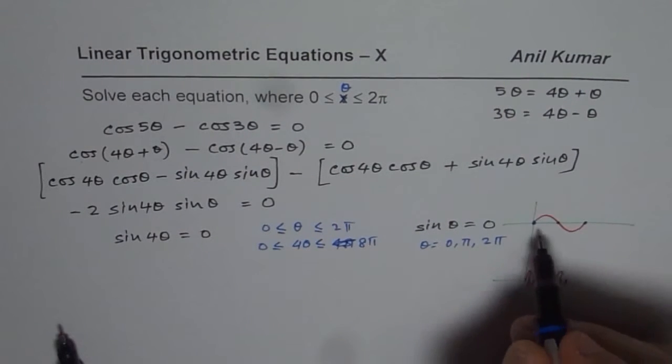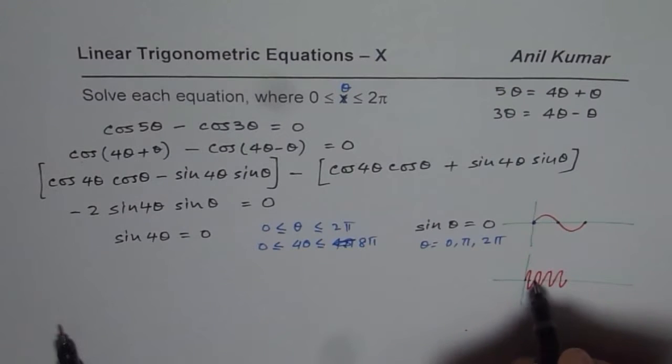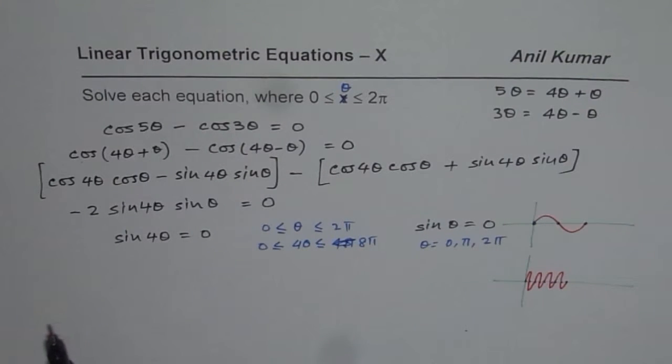If you have 4 cycles, you can see there are 1, 2, 3, 4, 5, 6, 7, 8, 9 points where the curve is 0.